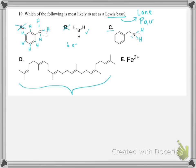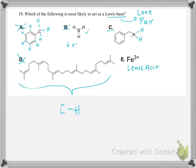This seems promising — it could be a Lewis base as it has a lone pair. For D, we have all carbon-hydrogen bonds, and those don't have any lone pairs associated with them, so that's out. And iron³⁺ is going to be our Lewis acid, not a Lewis base. So our Lewis base is option C because there's a lone pair in that structure.